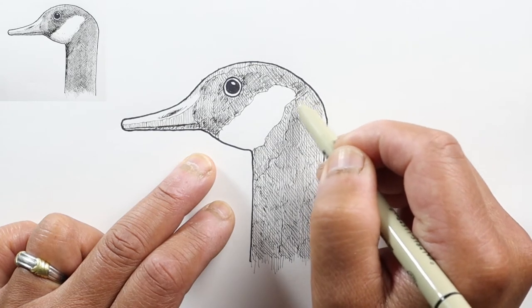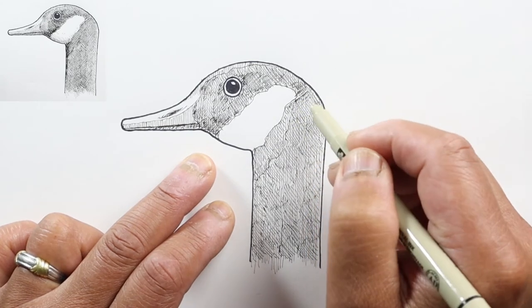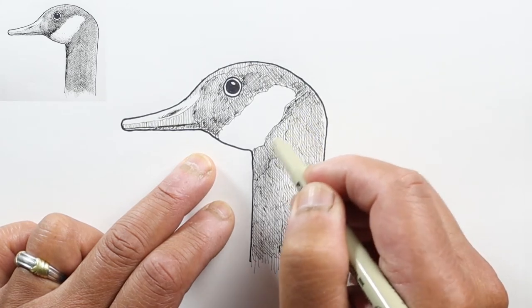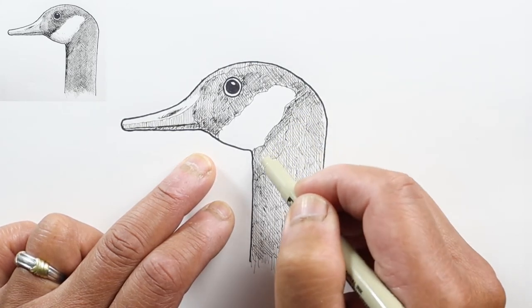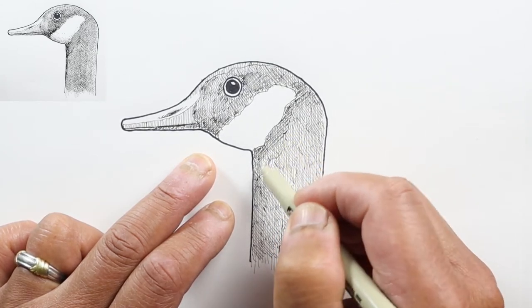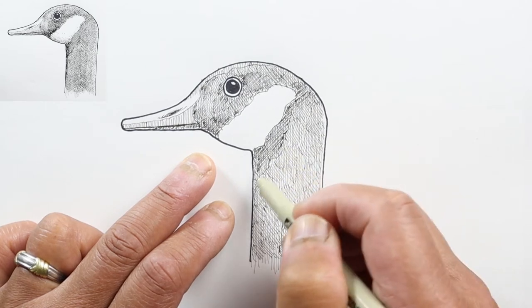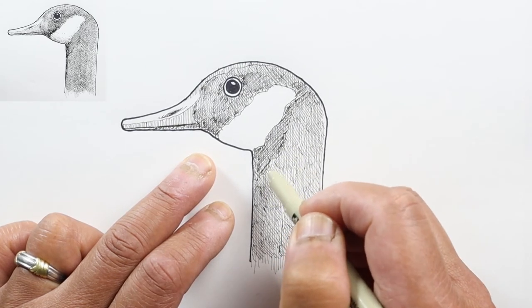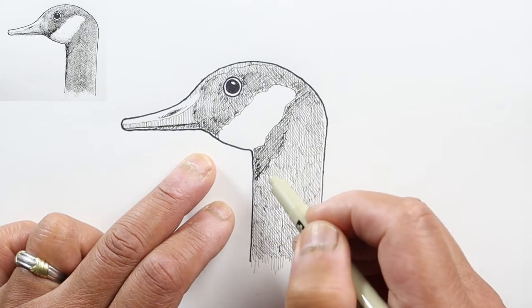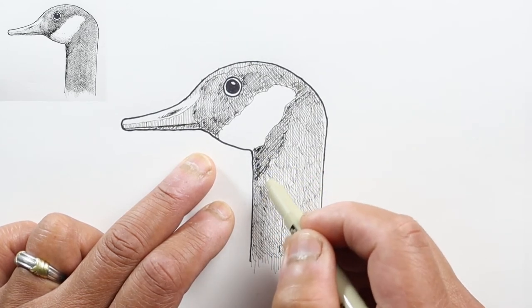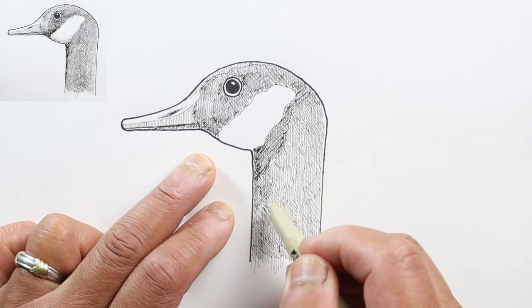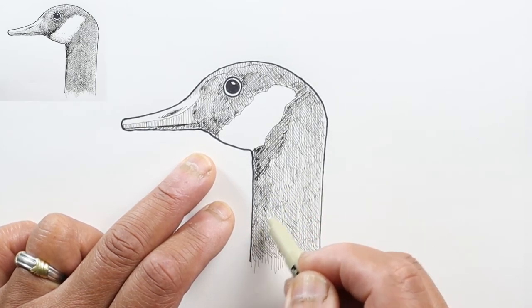Once we get to the neck, it's going to be pretty uniform as far as the color. It's going to be pretty much all dark, but I'm still going to add this extra shading right here just so in the end there'll still be a little bit of a change in the tonal values. Just like before, I'm going to start with my strokes going down the edge here.